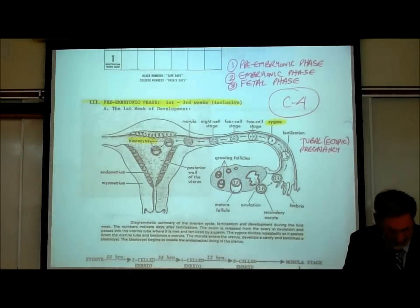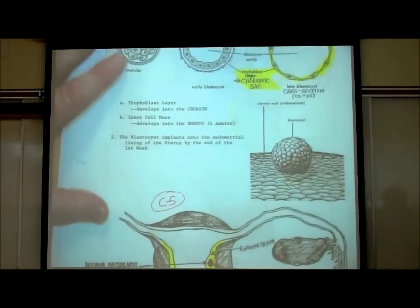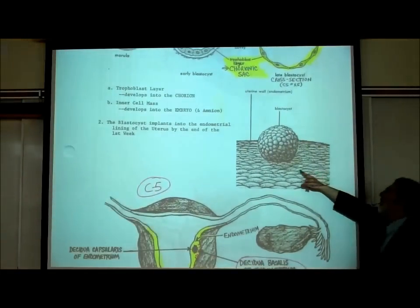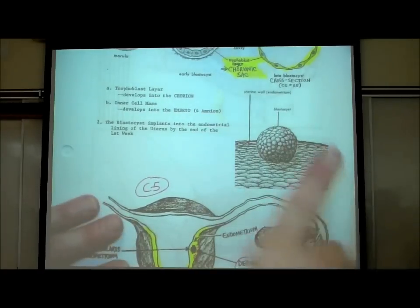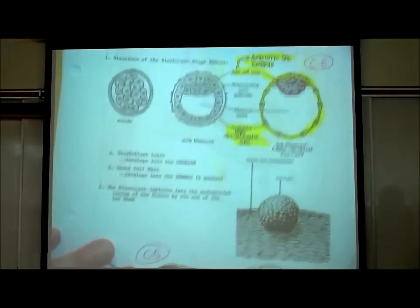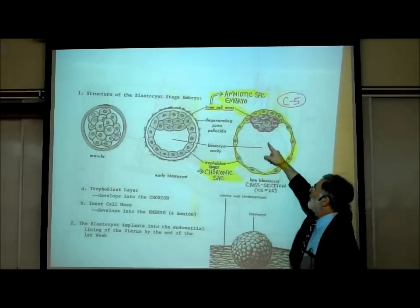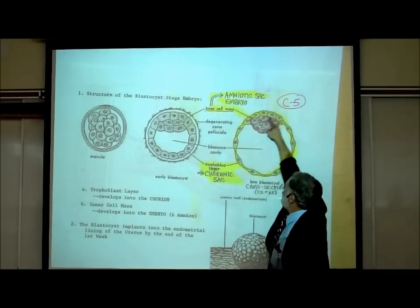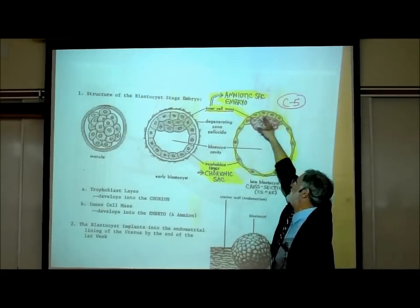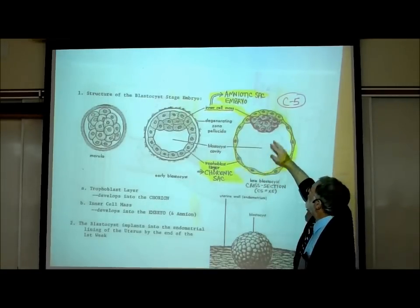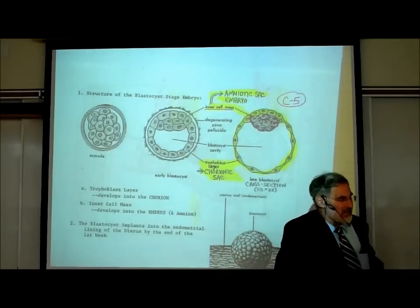On page C5, this is what the blastocyst looks like on the outside — it looks like a ball of cells. But when you make a cross-section through it, as shown at the top right on C5, it reveals that it's hollow on the inside. The outer layer of cells, called at this stage the trophoblast layer, will become the outermost sac called the chorionic sac. There's a cluster of cells at one end known as the inner cell mass.